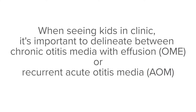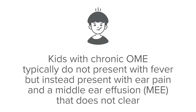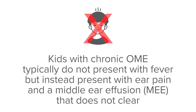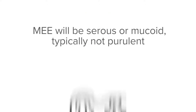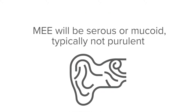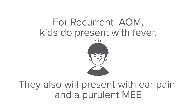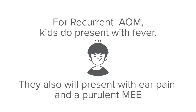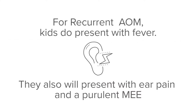When seeing kids in clinic with otitis media, it's important to delineate between chronic otitis media with effusion or recurrent acute otitis media, as these entities are treated differently. Kids that have chronic otitis media with effusion typically do not present with fever, but instead present with ear pain and a middle ear effusion that does not clear. The middle ear effusion will be serous or mucoid, typically not purulent. For recurrent acute otitis media, kids do present with fever, ear pain, and a purulent middle ear effusion. Sometimes the eardrum can even be red as well.